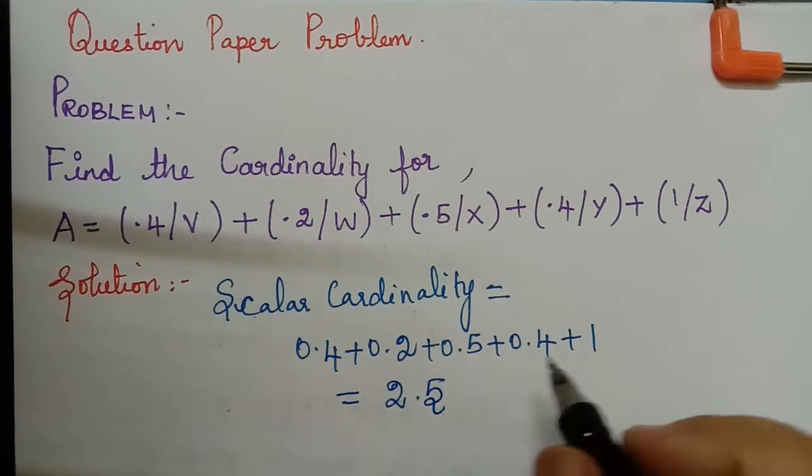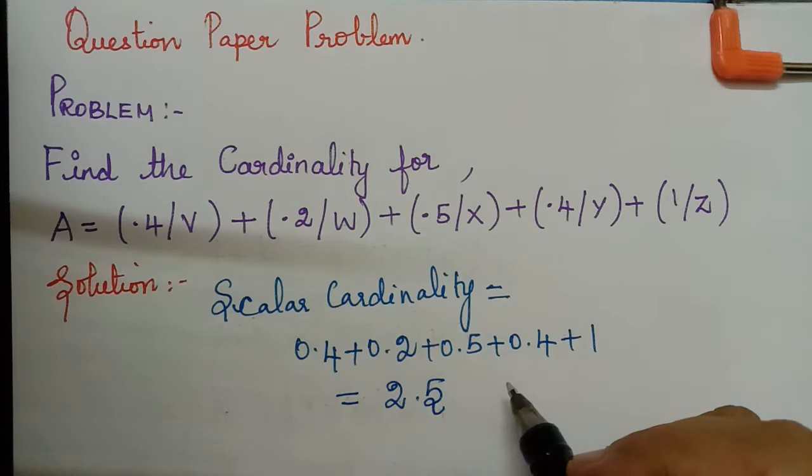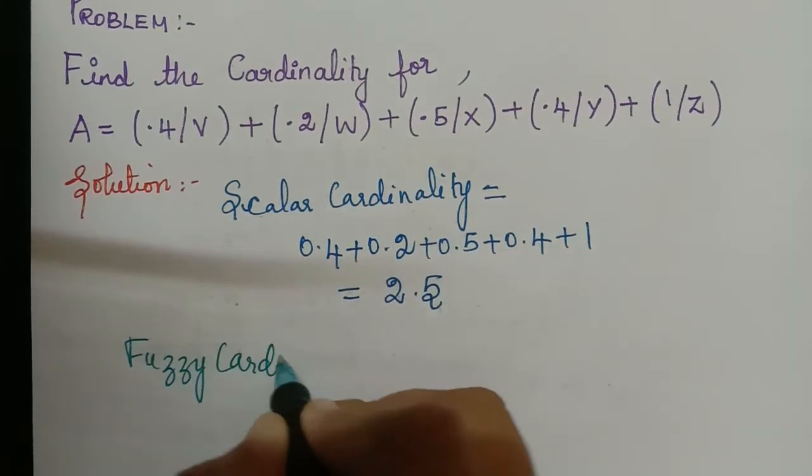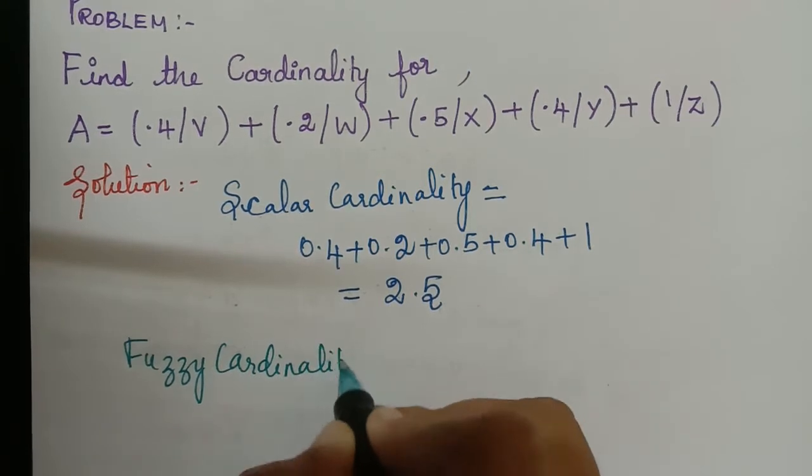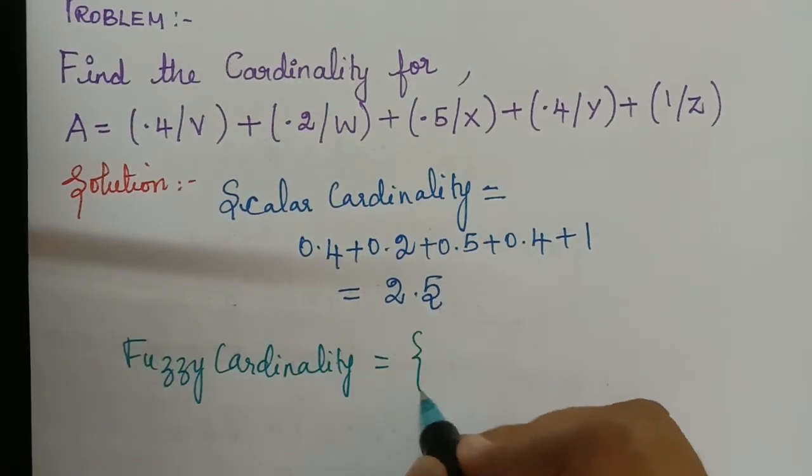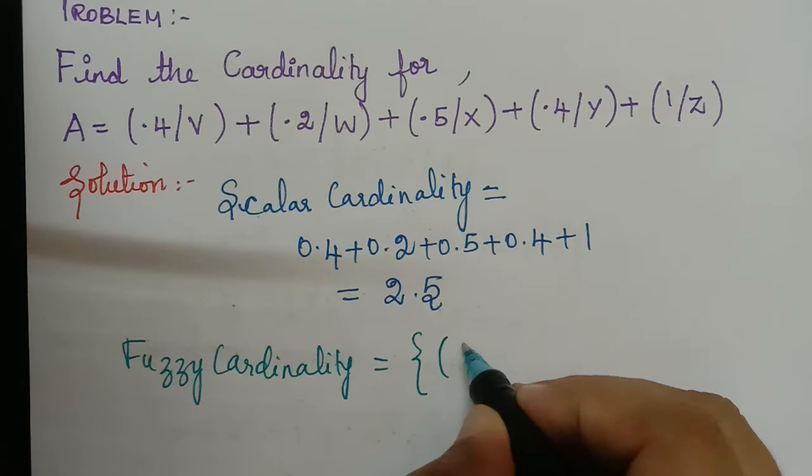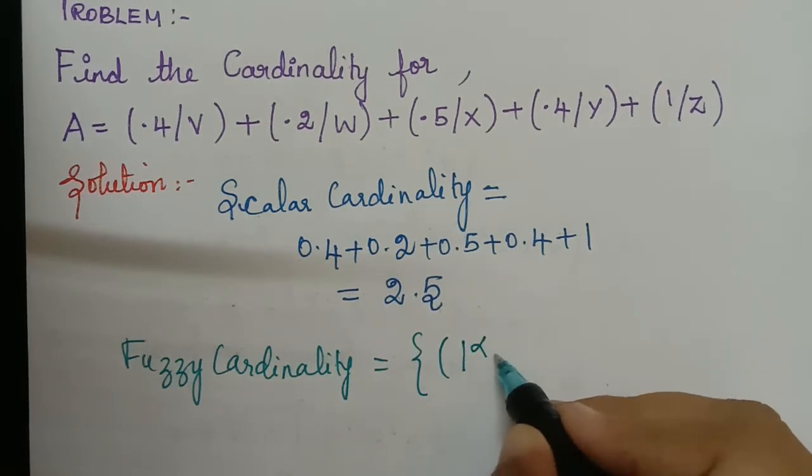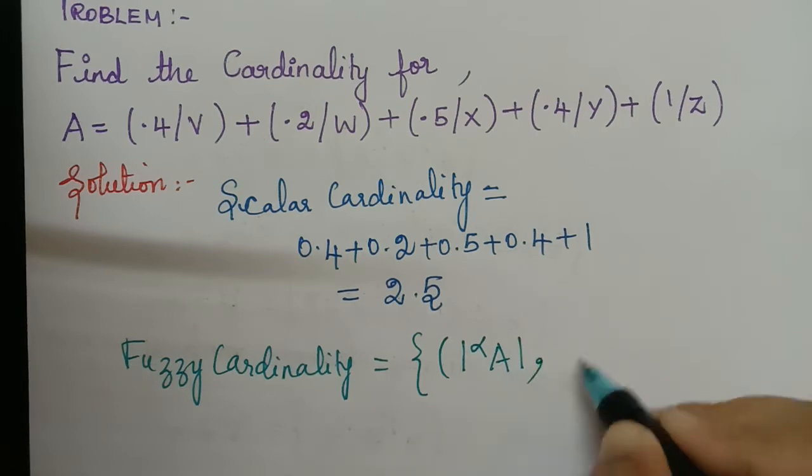So next we shall find the fuzzy cardinality. The fuzzy cardinality is given by we know that it is equal to the set of all ordered pairs where the pair is the cardinality of the alpha cut set comma alpha.